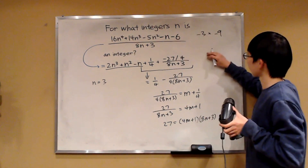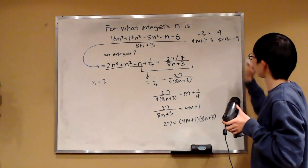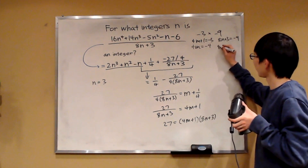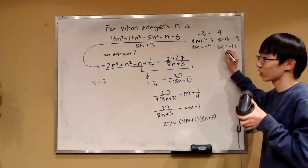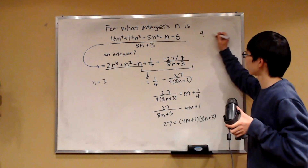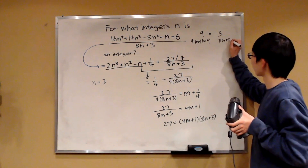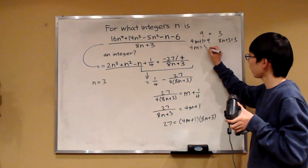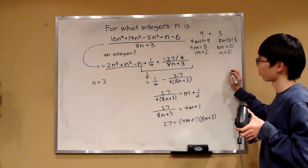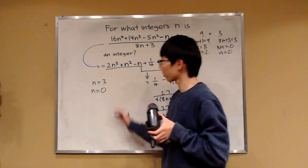What about negative 3 times negative 9? We have 4m plus 1 equals negative 3 and 8n plus 3 equals negative 9. So 4m equals negative 4, giving m equals negative 1 — an integer, passes the test. But then 8n equals negative 12, so n is not an integer. That doesn't work. Now consider 9 times 3: 4m plus 1 equals 9 and 8n plus 3 equals 3. This gives 4m equals 8, so m equals 2 — an integer. And 8n equals 0, so n equals 0. That's another solution!